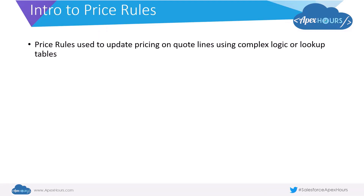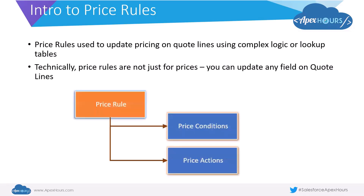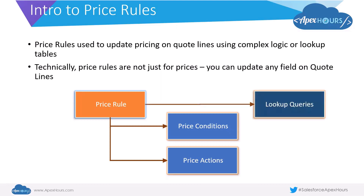Price rules in Salesforce CPQ are used to update pricing on quote lines using complex logic on lookup tables. They are automations which you can build based on certain criteria to update the price on the quote lines. Technically, price rules are not just for prices — the rules form a structure where you can update any field on quote lines. A price rule is set up by defining the rule header, and with it you associate price conditions and price actions. When the price conditions are met, the price actions take effect. There's also another object tied to price rules called lookup queries, which we will look at later.